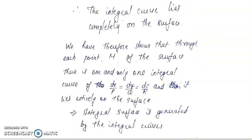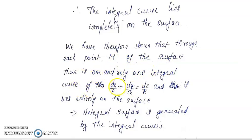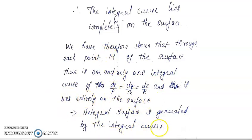So that is the first part of the theorem. There is one and only one integral curve of dx/P equal to dy/Q equal to dz/R which lies entirely on the surface. So for M an arbitrary point, the integral surface will be generated by the integral curves.